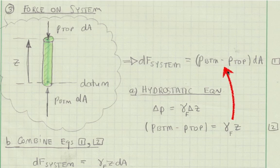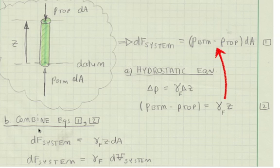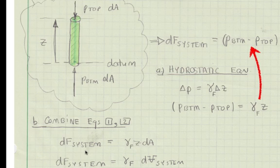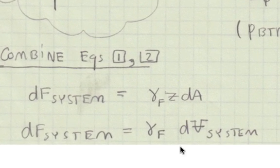Now we can substitute here as shown. Formally, if we combine equations 1 and 2, we see that the differential force on the system is given by these terms. But the height of the system times its area dA, so height times dA, is simply the volume of the system. Thus, the force on the system is the specific weight of the fluid times the differential volume of the system.